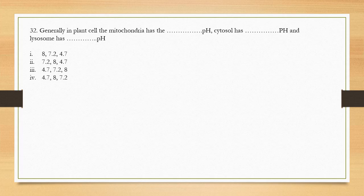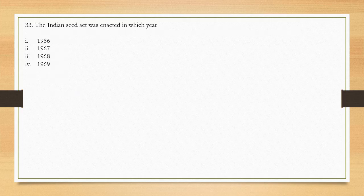Question number 32: In plant cells, mitochondria have a pH of 8, cytosol has a pH of around 7.2 (near neutral), and lysosomes have a pH of 4.7 because they contain hydrolytic enzymes. So option 1 is the correct answer.